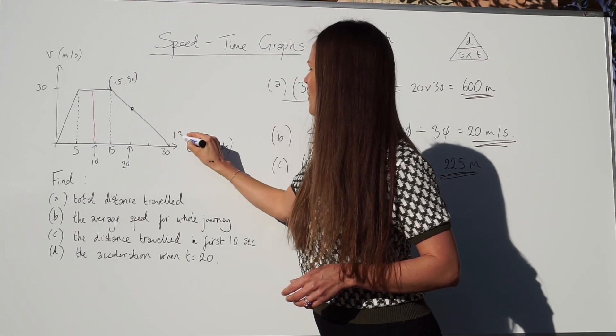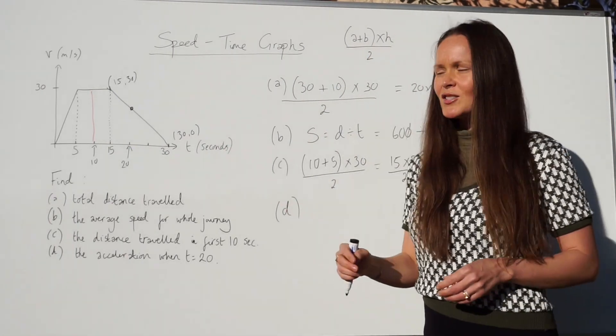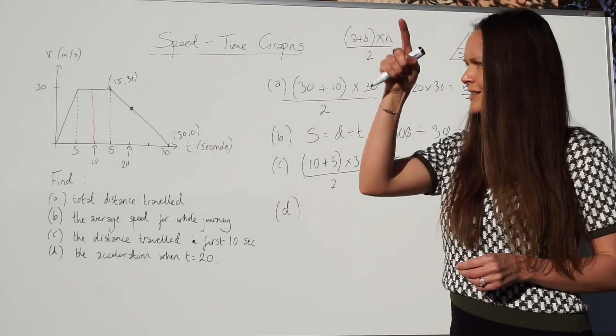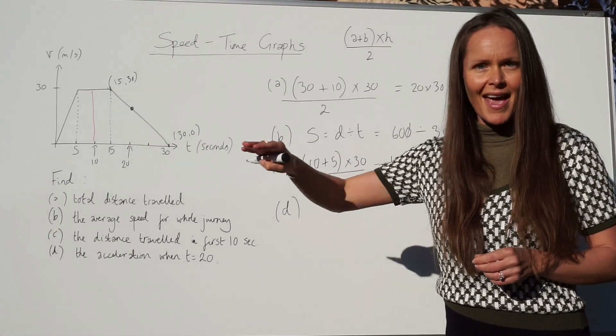Rise over run means you have to subtract the y values. That's the rise. And, then you divide by the run, which is the difference in the x values. So, here are the y values, 30 and 0. So, if I subtract those first, I get 30 minus 0. Then, I need to subtract the x values. So, 15 take away 30.